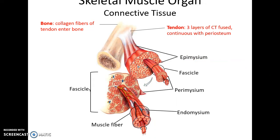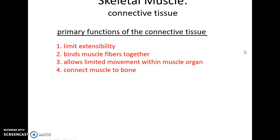All of these layers of connective tissue fuse to form the tendon, which then becomes continuous with the periosteum around the bones. Collagen fibers from the tendon actually penetrate into the bone itself. The connective tissue helps to limit extensibility so muscles don't overstretch, binds muscle fibers together so they work as a group, allows for movement within the muscle organ so different fascicles can contract or relax, and connects the muscle to the bone.